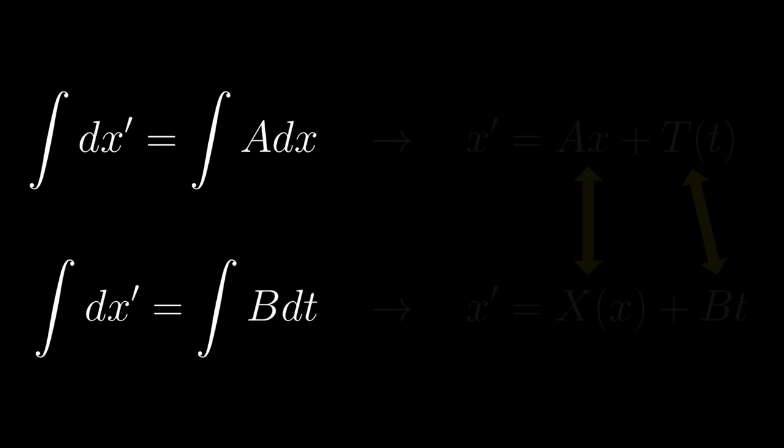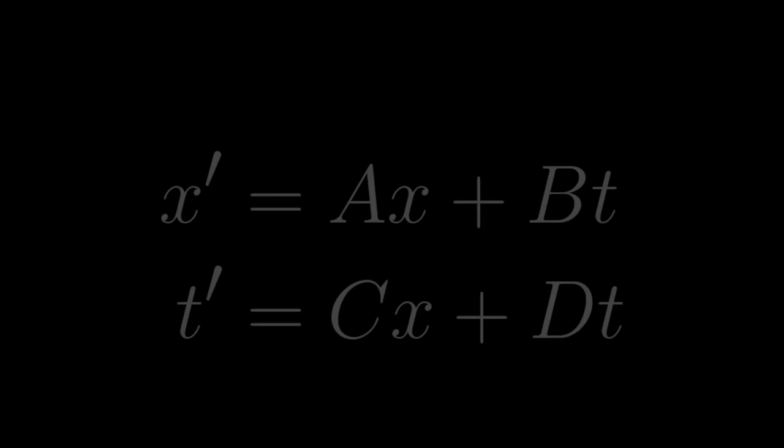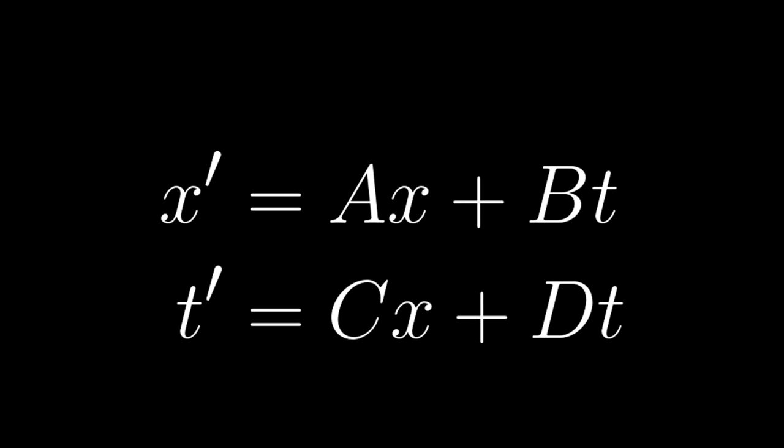Finally, we repeat the same argument with Jim's time coordinate, t prime, and we find that t prime is equal to c times x plus d times t. Looking at these two expressions side by side, we should immediately see that the transformation from Annie's frame of reference into Jim's takes on a linear structure.